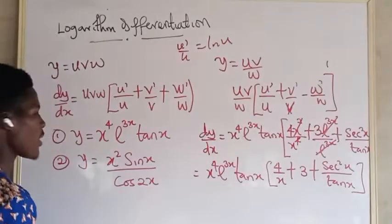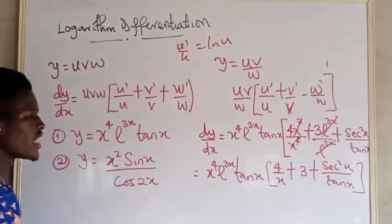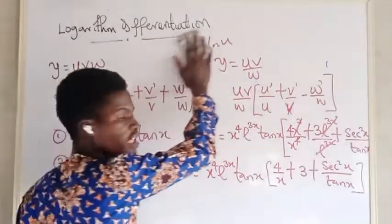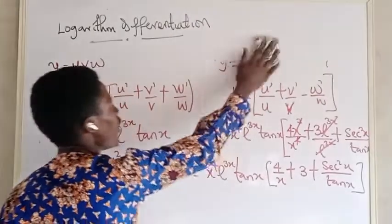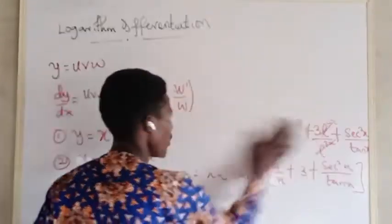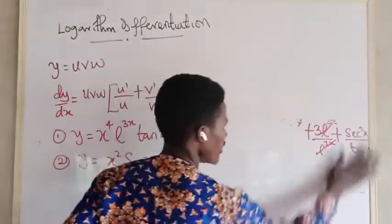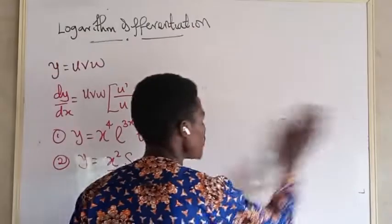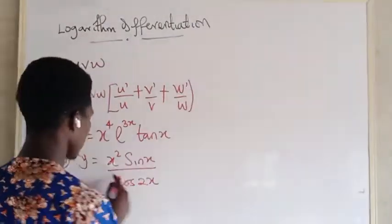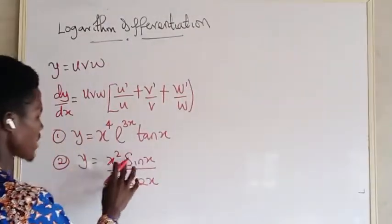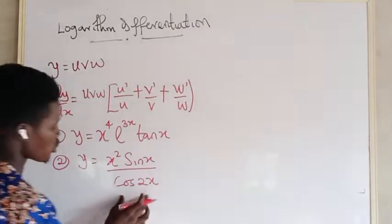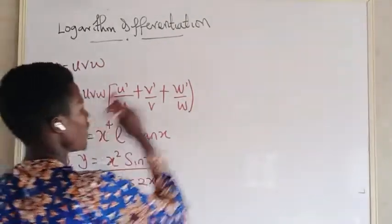Don't forget to subscribe, like, and share this video. Now for the second example, we have y equals x² · sin(x) over cos(2x). So how do you handle that?